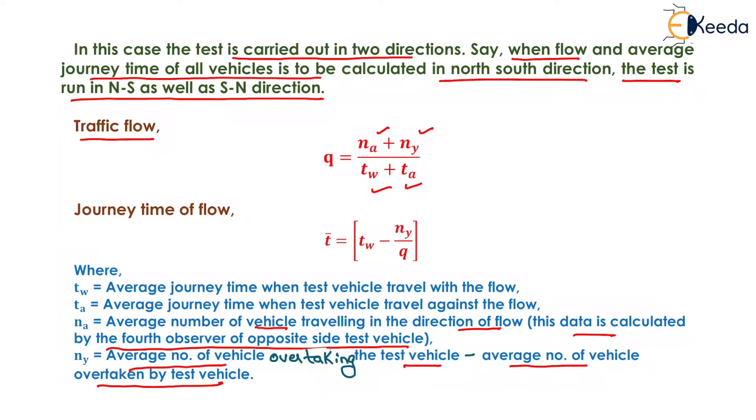Tw is the average journey time when test vehicle travel with the flow and Ta is the average journey time when test vehicle travel against the flow. If we want to determine the journey time of flow, then it will be equals to Tw minus Ny upon Q.